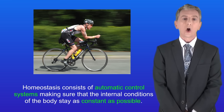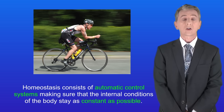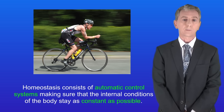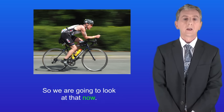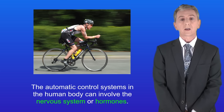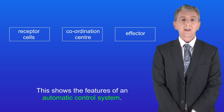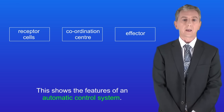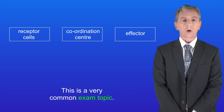Homeostasis consists of automatic control systems making sure that the internal conditions of the body stay as constant as possible. In the exam you could be asked to describe the general features of an automatic control system, so we're going to look at that now. The automatic control systems in the human body can involve the nervous system or hormones, and we'll be looking at both of those in later videos. I'm showing you the features of an automatic control system here — it's really important that you learn everything in this section, as it's a very common exam topic.